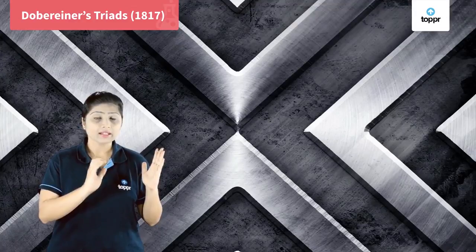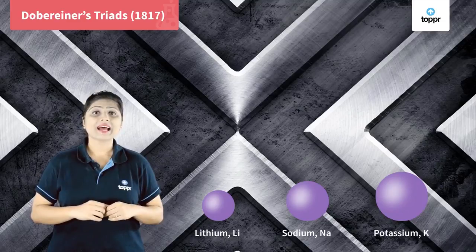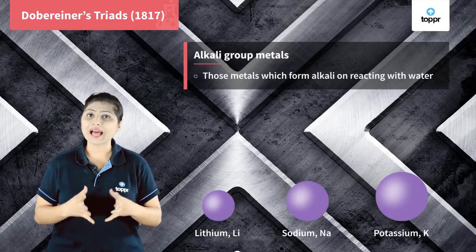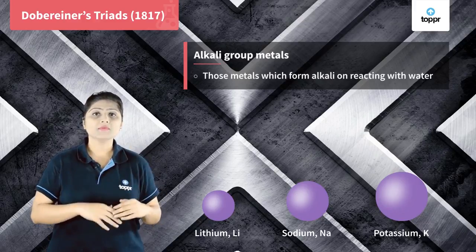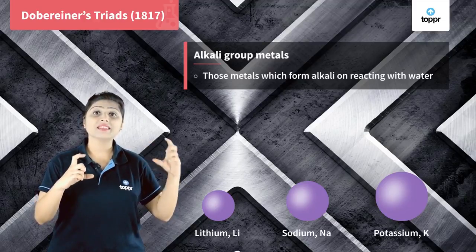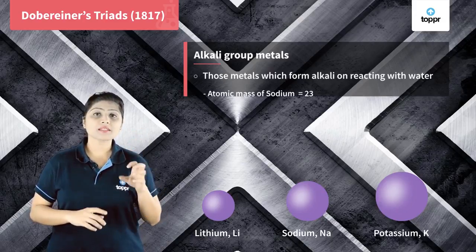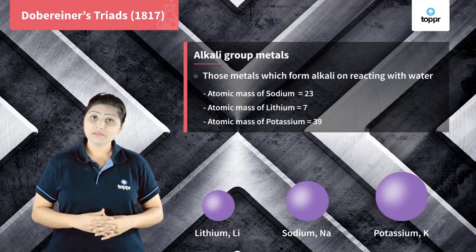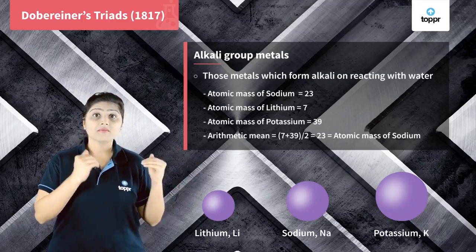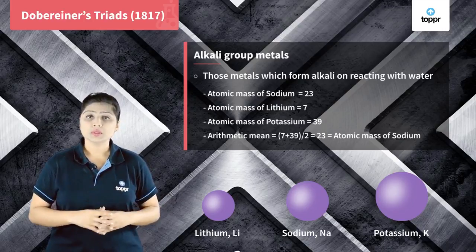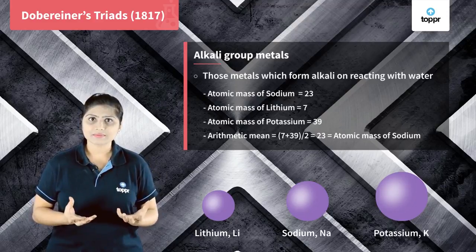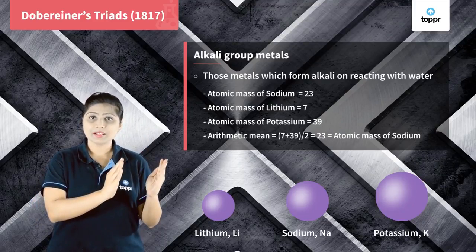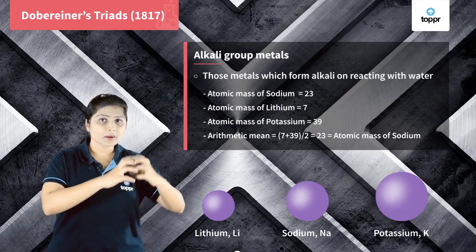He considered the first group, which had lithium, sodium, and potassium. He found that these elements are alkali metals — that is, metals which react with water and form an alkali, which is a base. In this group, lithium and potassium are the first and third elements, and the middle element is sodium. Sodium's atomic mass is 23, lithium's is 7, and potassium's is 39. Taking the arithmetic mean of lithium and potassium: (7 + 39) / 2 = 46 / 2 = 23, which is exactly the atomic mass of sodium. So Döbereiner's observation was correct.